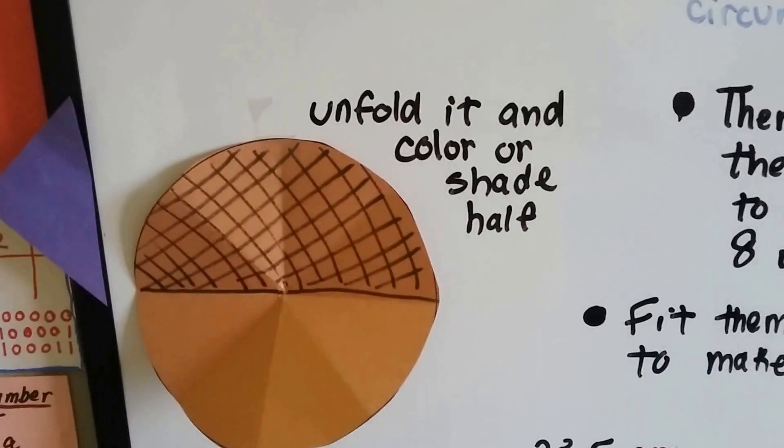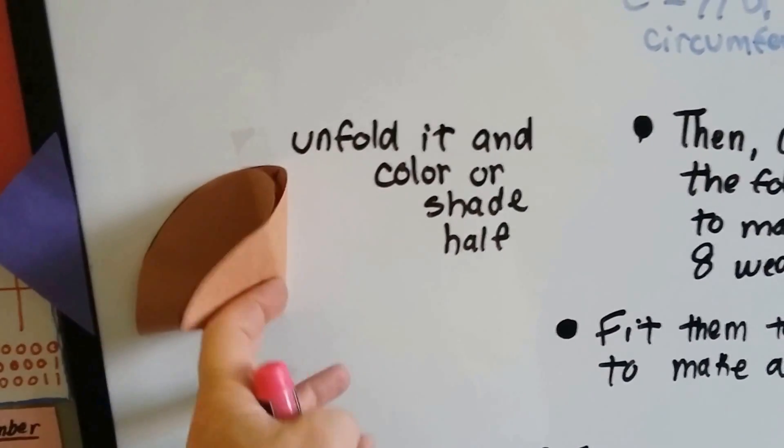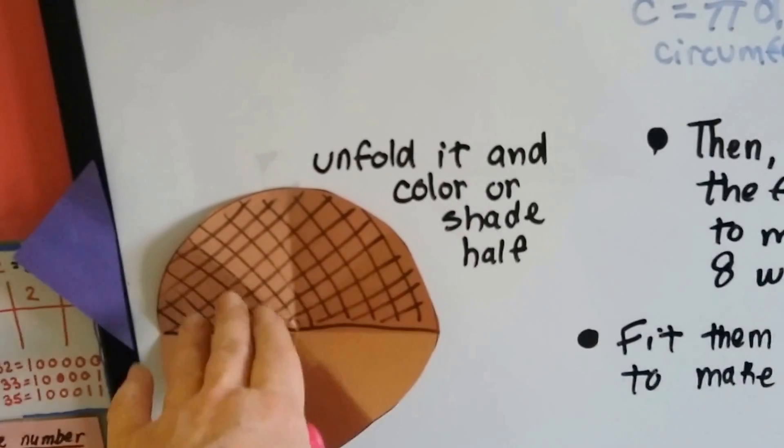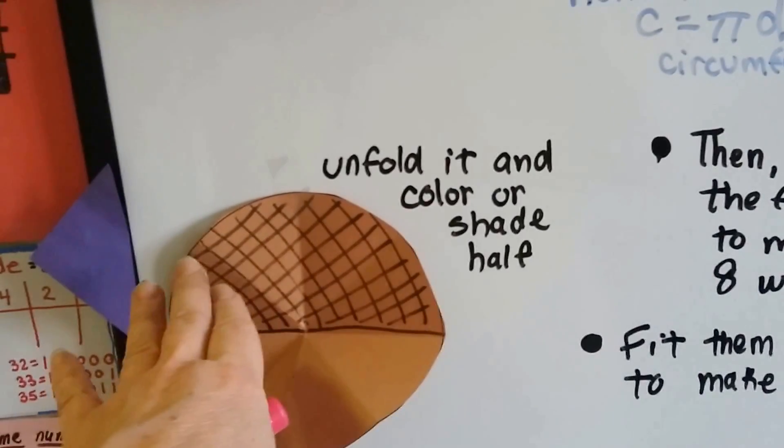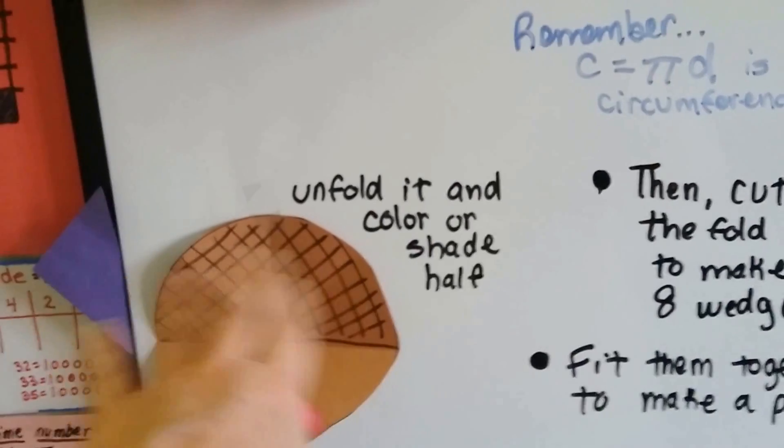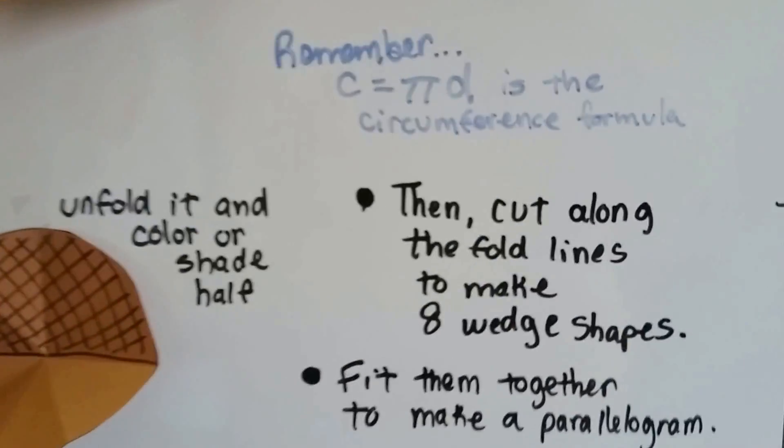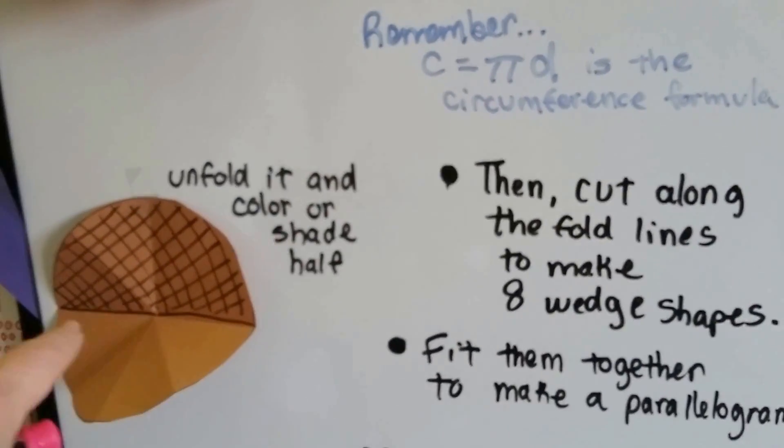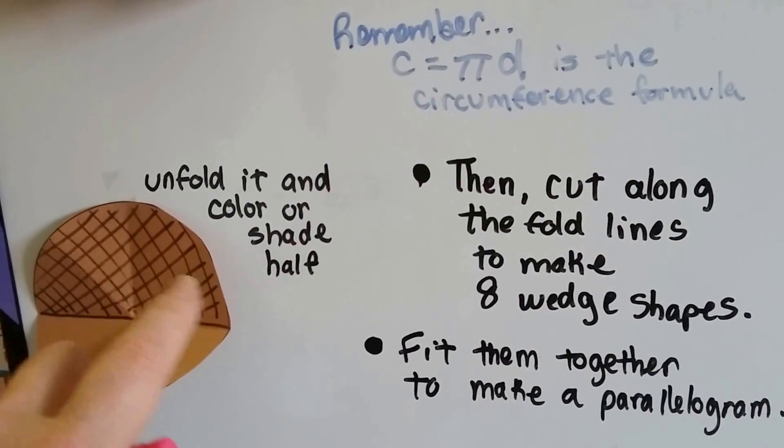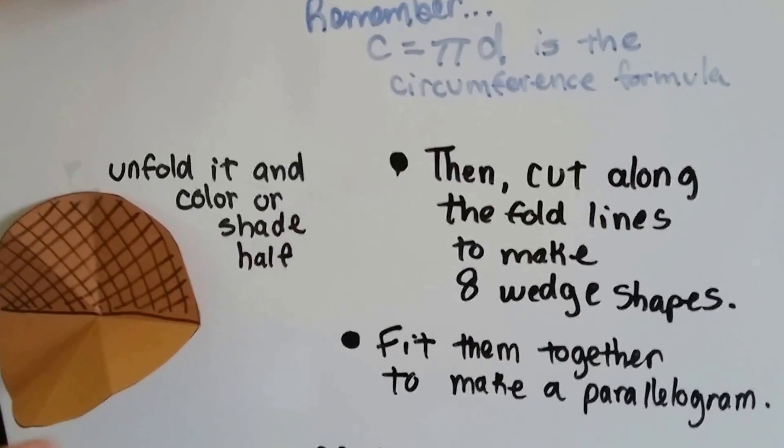Then unfold it and open it all up. Once it's folded, unfold it and open it all up and then color or shade half of it. You can color it all in or you could do check marks like I did as long as you get the whole thing shaded. Then cut along every single fold line until you cut out eight wedge shapes, like eight slices of pizza.